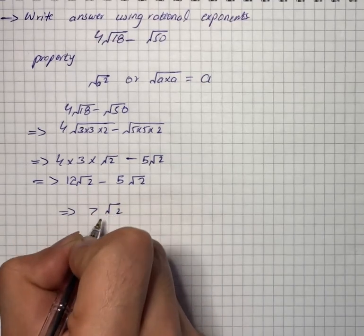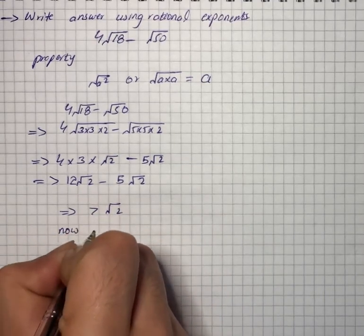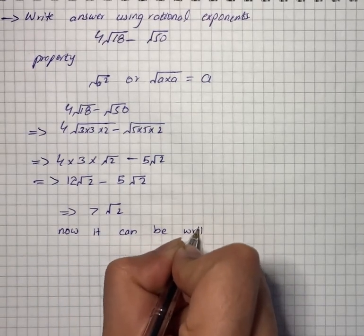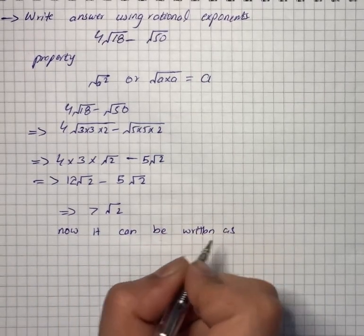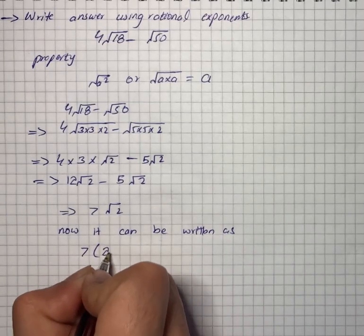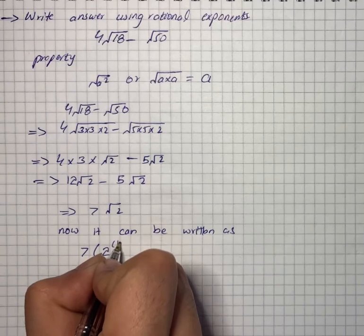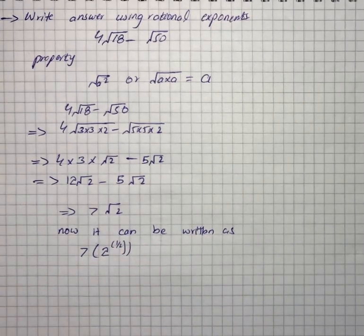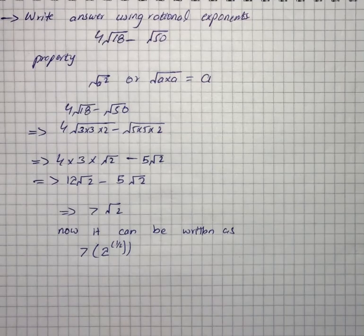Now it can be written as 7 × 2^(1/2). That is our solution for the given question.